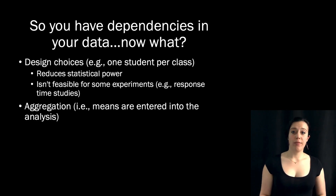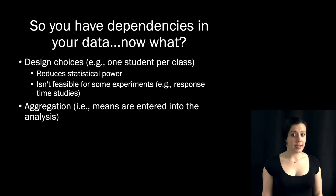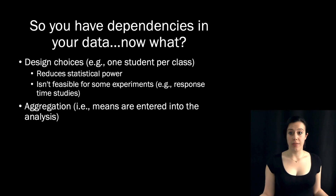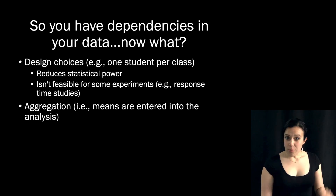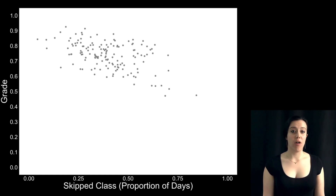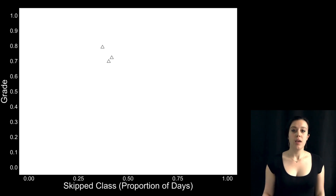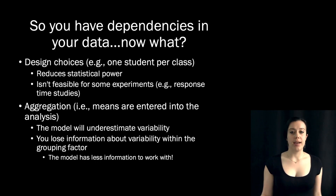So how do you analyze your data when you know those dependencies are there? In the past, people have relied on aggregation. Instead of entering individual data points into your analysis, you enter means. In the class example, instead of entering a bunch of data points from the same class into the regression, you just enter three means, one per class. Now, aggregation is great — it suppresses error, and there's a time and a place for that. But that's also the key issue: it suppresses error, meaning that the model will underestimate variability. If the data we have show a lot of spread, but the only thing we tell the model about are the means, we've lost a ton of information about variability within those classes. When you aggregate, you lose information.